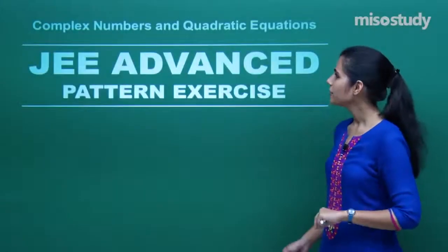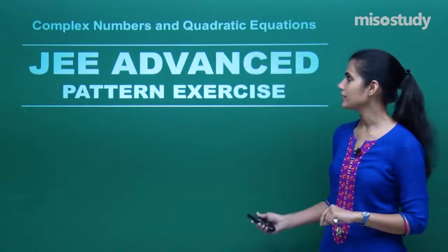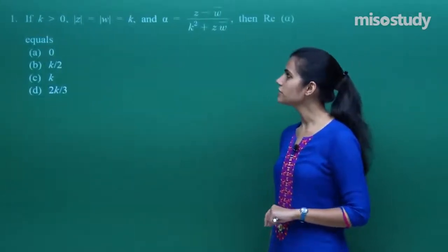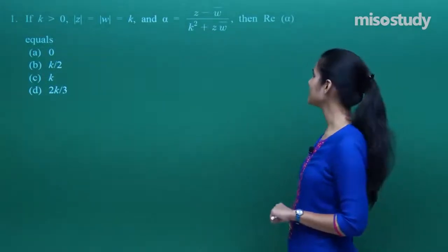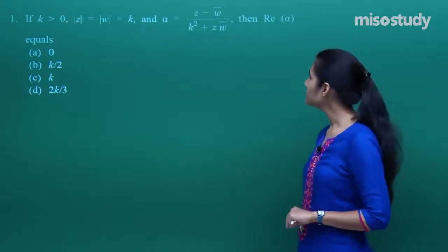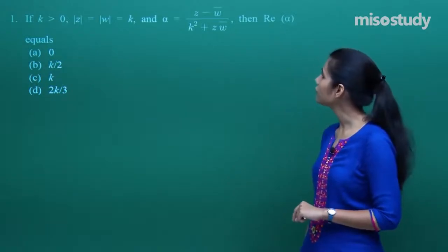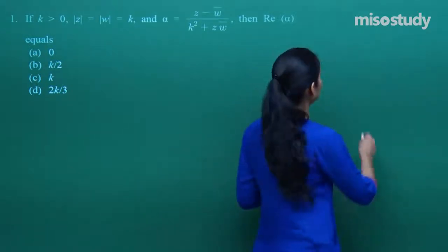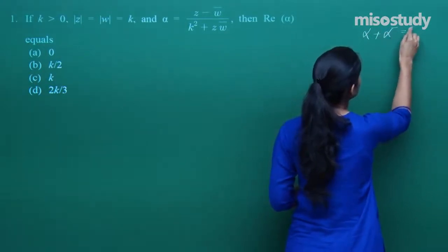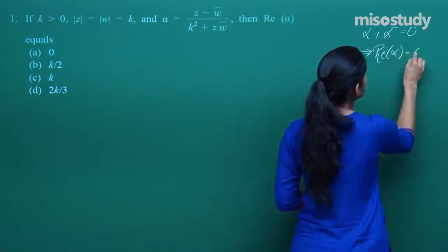Let's begin the JEE Advanced Pattern Exercises for Complex Numbers and Quadratic Equations. The first question says that modulus of z equals modulus of w equals k, and alpha is given by (z minus w-bar) upon (k² plus z·w-bar). We need to find the real part of alpha. The moment we show that alpha plus alpha-bar equals 0, this implies the real part of alpha is 0.